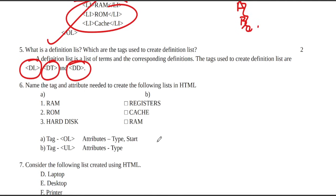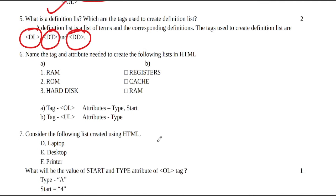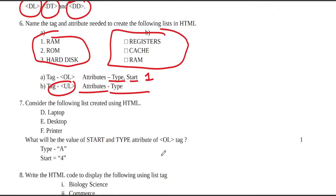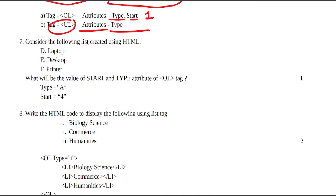Name the tag and attribute needed to create the following list. This will create an ordered list using type and start attributes, with start=1. Consider the following list created using HTML — this will be an ordered list with start=4.